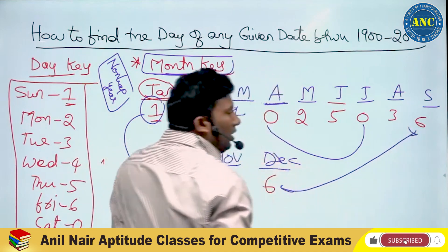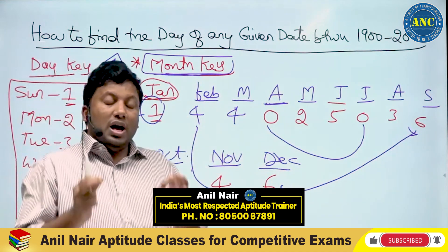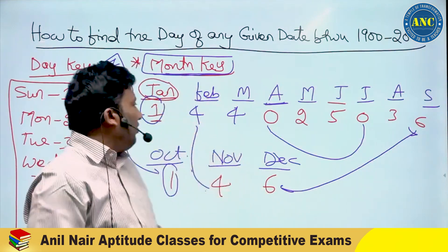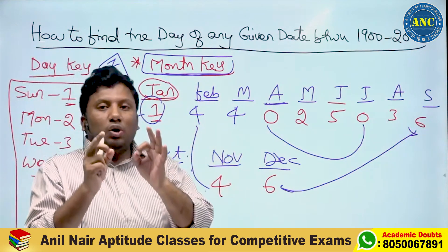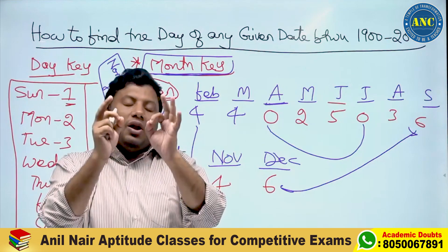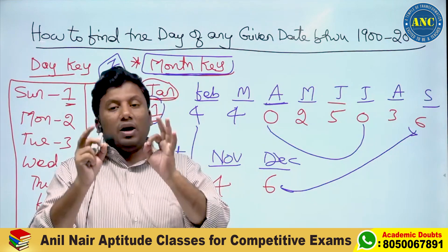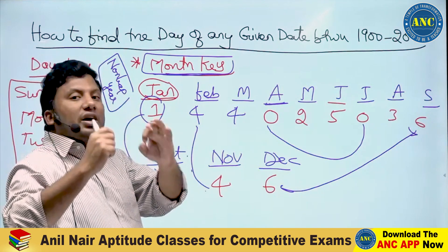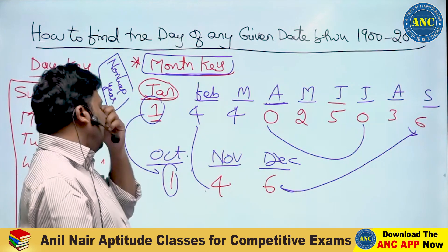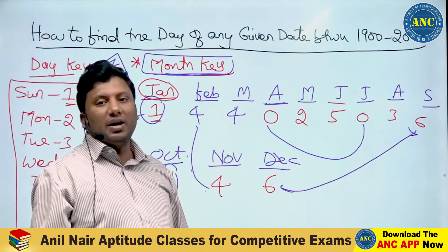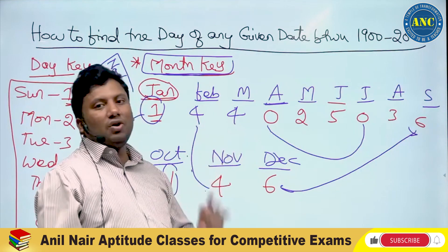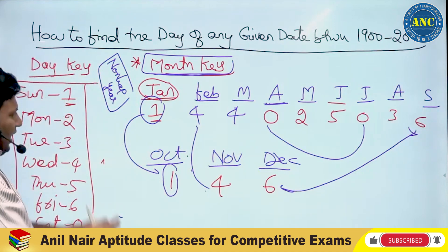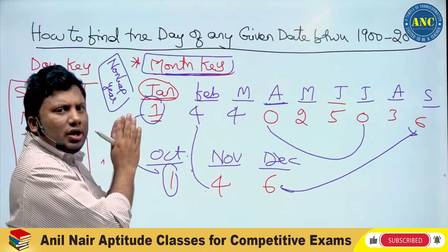Please write this down in your notebook. If January 1st of a non-leap year is a Sunday, then October 1st of that same non-leap year will also be a Sunday. I took February as 28 days: 28 divided by 7, remainder 0, so 4 plus 0 is 4. You don't need to remember anything — it's very easy.